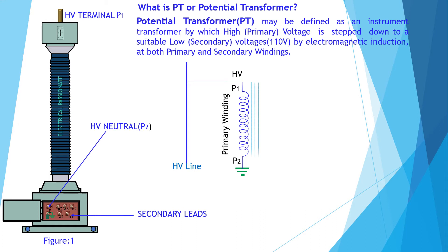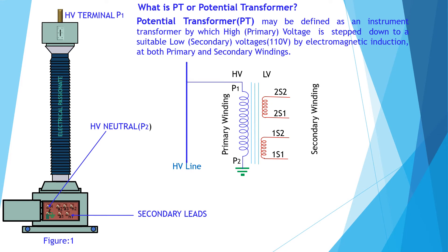These are the secondary windings. Two or more windings of small turns are used as secondary windings. 1S1 and 1S2, and 2S1 and 2S2 are the secondary terminal connections. The system voltage is applied across the terminals of the primary winding of the transformer, and then proportionate secondary voltages appear across the secondary windings.